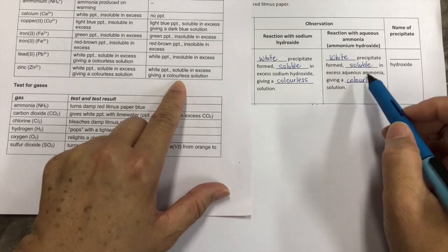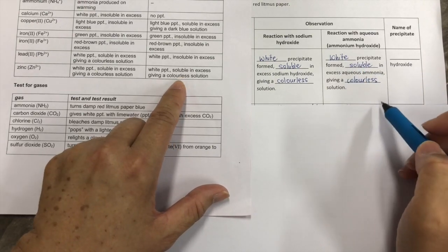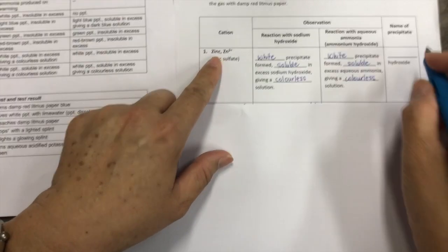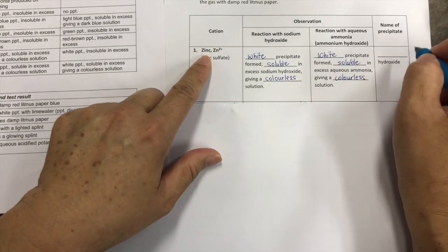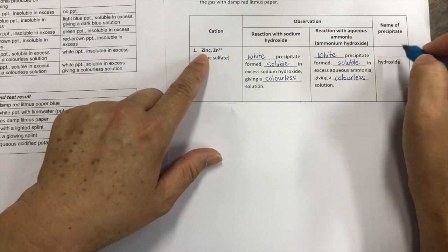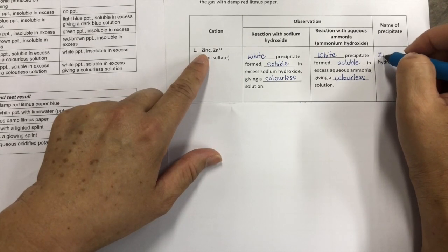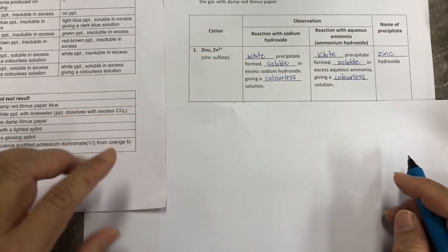Check one more time that you have written the correct keywords. As for the name of the precipitate, you just need to look at the cation that you are testing, which is now zinc. So, the name of the precipitate would be zinc hydroxide.